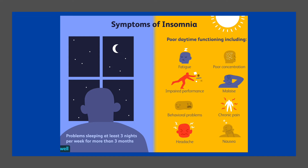There is also a genetic element to insomnia, and heritability estimates vary between 38% in males and 59% in females. A genome-wide association study identified three genomic loci and seven genes that influence the risk of insomnia, and showed that insomnia is highly polygenic. In particular, a strong positive association was observed for the MEIS1 gene in both males and females. The study showed that the genetic architecture of insomnia strongly overlaps with psychiatric disorders and metabolic traits.